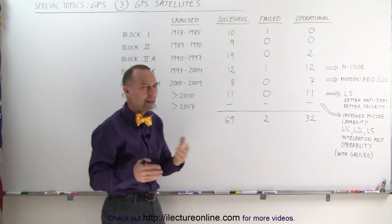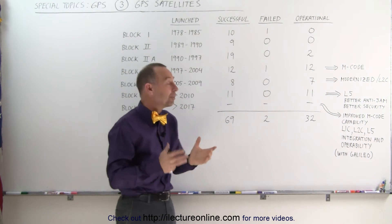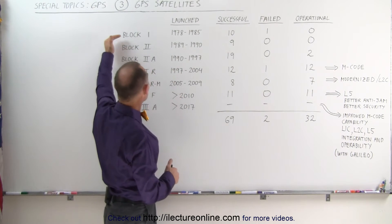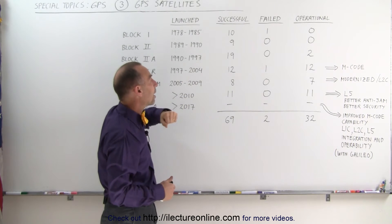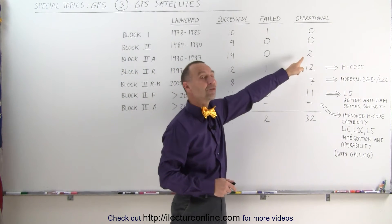Back in the early 1990s, I believe back in 1993, they had a combination of 24 satellites between Block I and Block II that allowed them to be operational. There's only two of those left.